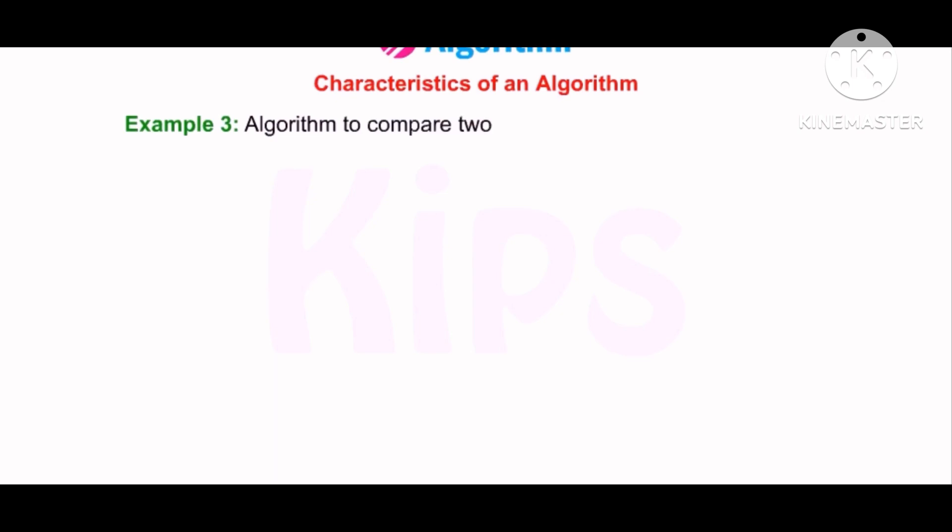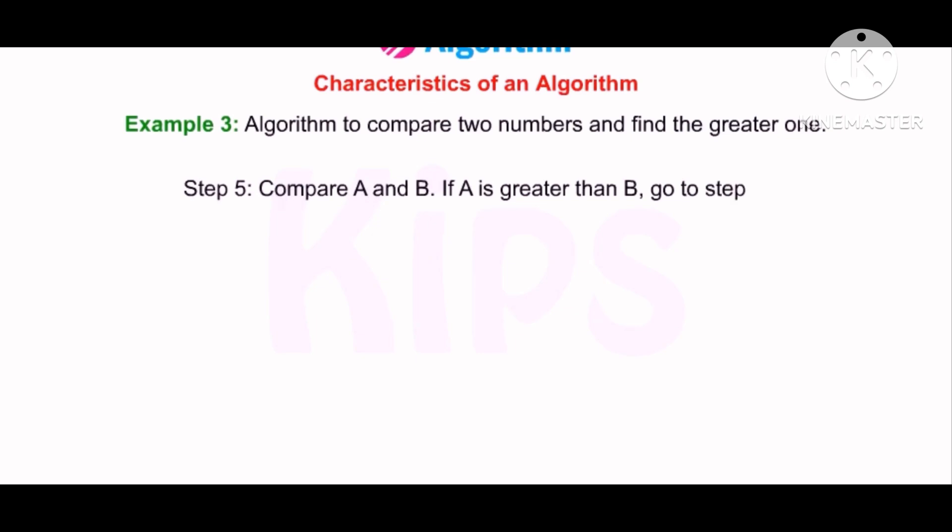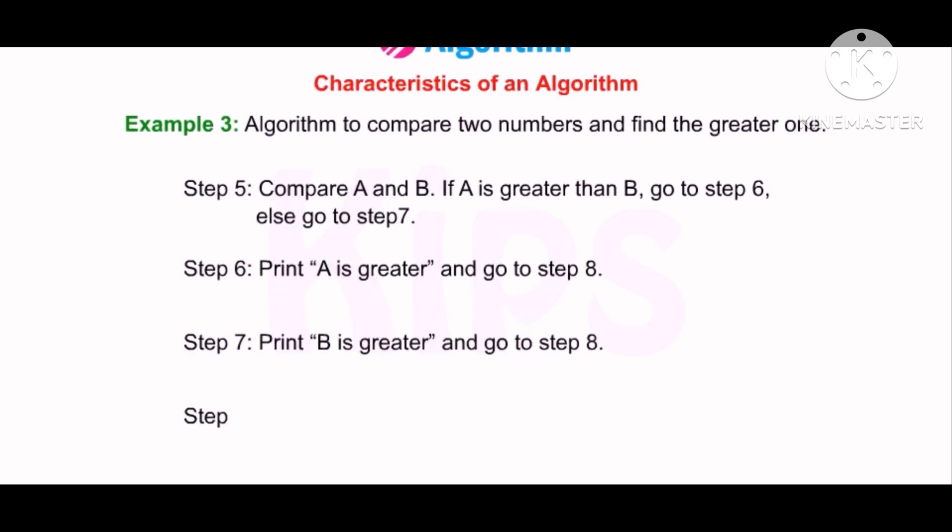Example 3: Algorithm to compare two numbers and find the greater one. Step 1. Start. Step 2. Input two numbers and store them in A and B. Step 3. Check whether A is equal to B or not. If true, then go to step 4. Else, go to step 5. Step 4. Print "Both numbers are equal" and go to step 8. Step 5. Compare A and B. If A is greater than B, go to step 6. Else, go to step 7. Step 6. Print "A is greater" and go to step 8. Step 7. Print "B is greater" and go to step 8. Step 8. Stop.